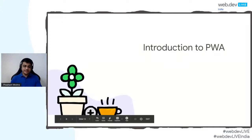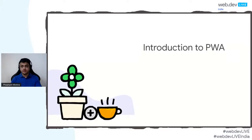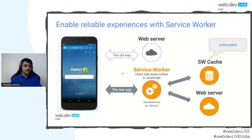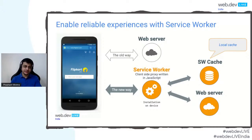Now let's talk about Progressive Web Apps. The top flow in the slide shows how a vanilla website interacts with the web server — calls are made directly to the origin and the response renders the page. With a Progressive Web App, we get something called a service worker, which is a client-side proxy written in JavaScript. It is installed on the device and acts between the browser, caches, and the web server, as shown in the diagram.